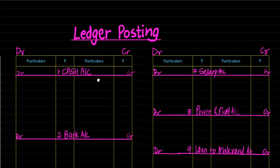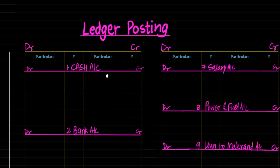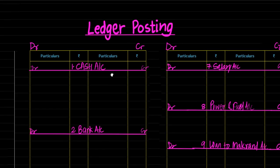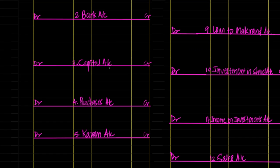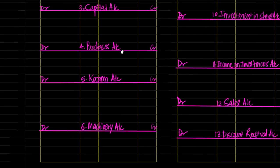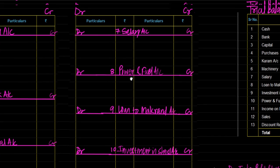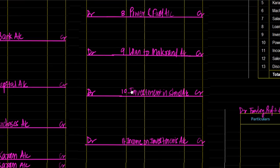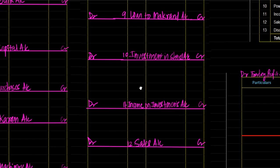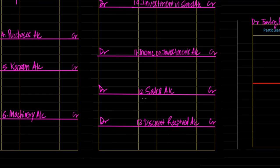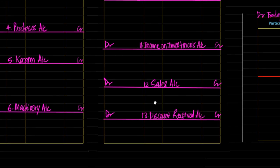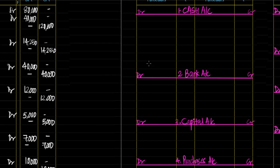Let's quickly write these accounts and leave some space for transaction posting. In ledger posting we have opened these accounts consecutively: cash account, bank account, capital account, purchases account, Karam account, machinery account, salary account, power and fuel account, loan to Makran account, investment in shares account, income on investments account, sales account, and discount received account. From journal we would read each journal entry and accordingly post it to ledger.